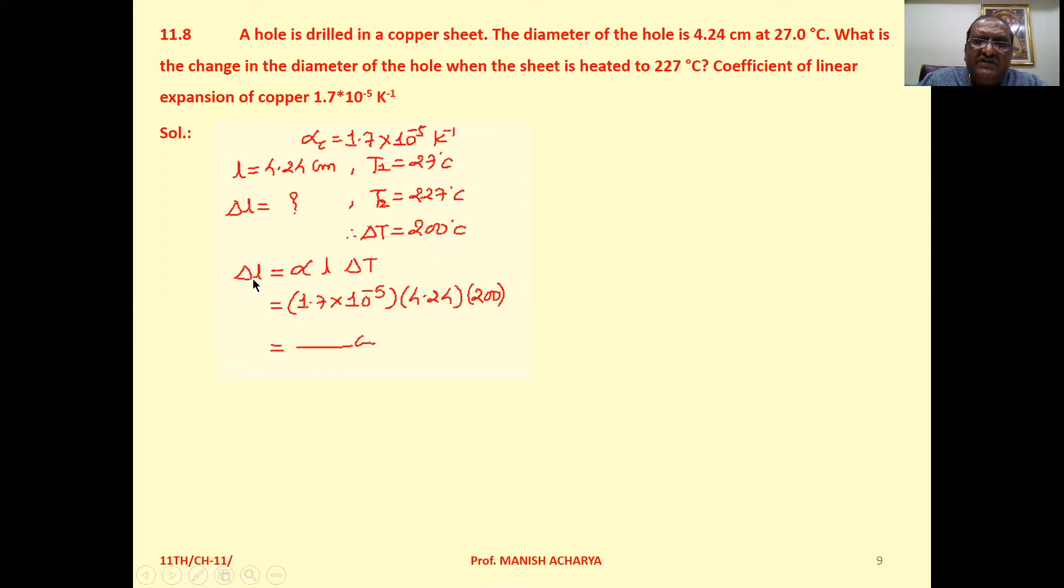We can use the equation: change in length, delta L, equals alpha L delta T. Alpha is 1.7 into 10 raised to minus 5, L is 4.24, delta T is 200.